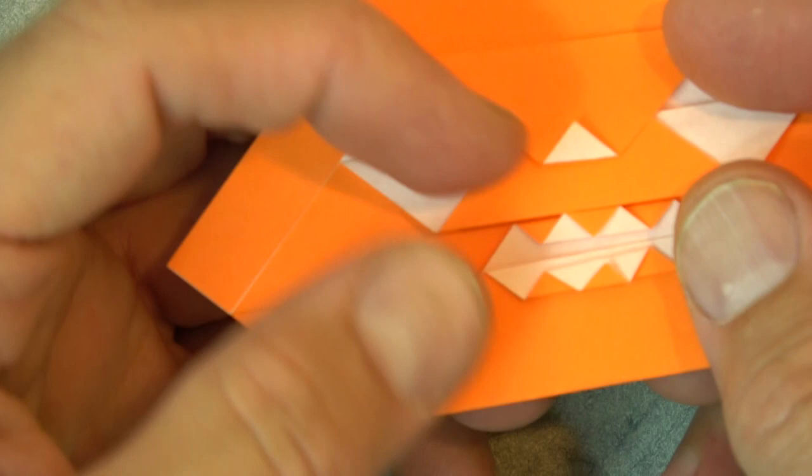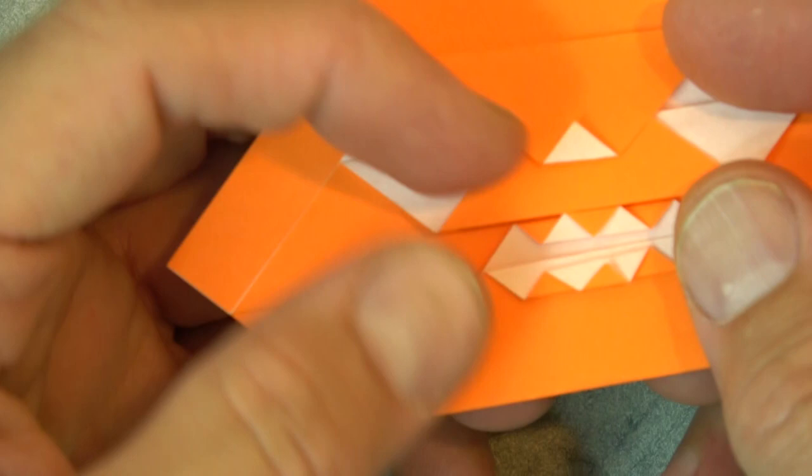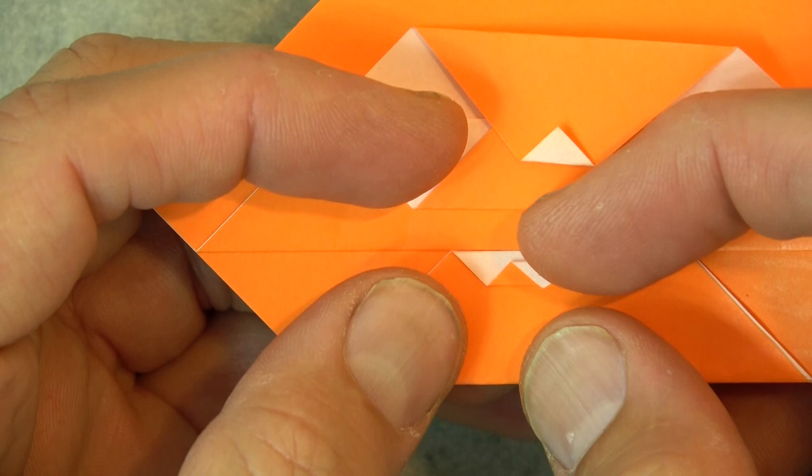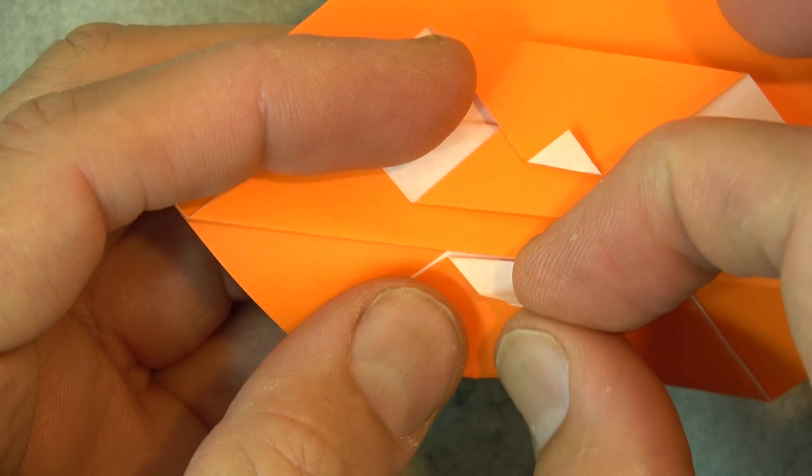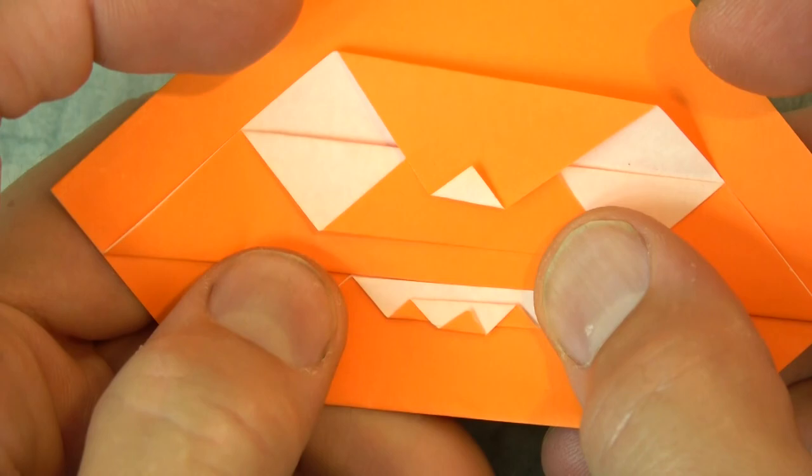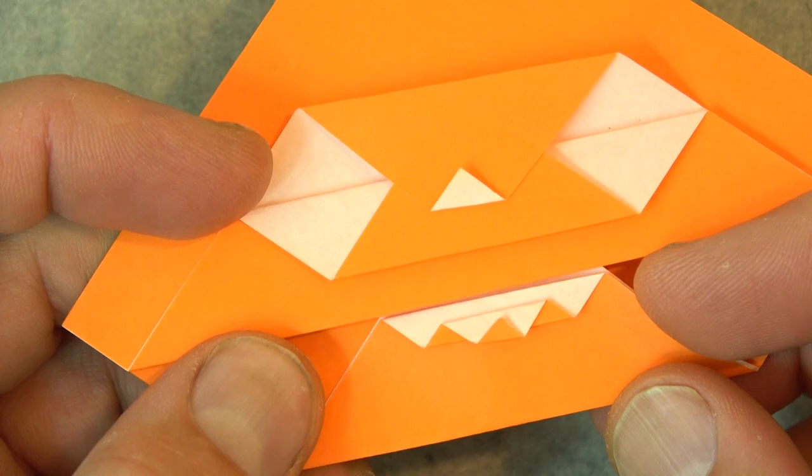Okay. So here we have the basic face. The scary face. And if you want to make it happy then you just hide it like that. You might want to bring this flap down a little bit to make it look happier. Like that. You can adjust those pleats however you want. Okay. So there is the happy jack-o-lantern. And it goes like that.